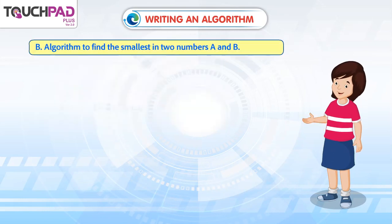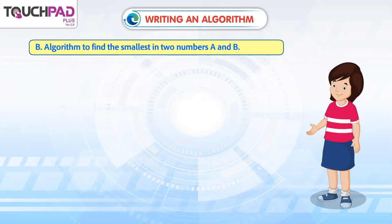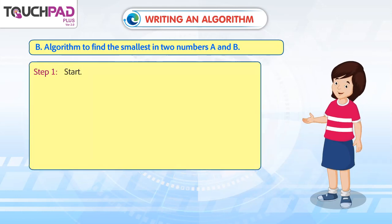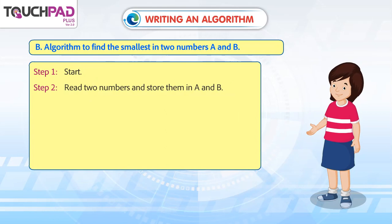B. Algorithm to find the smallest in two numbers A and B. Step 1: Start. Step 2: Read two numbers and store them in A and B.